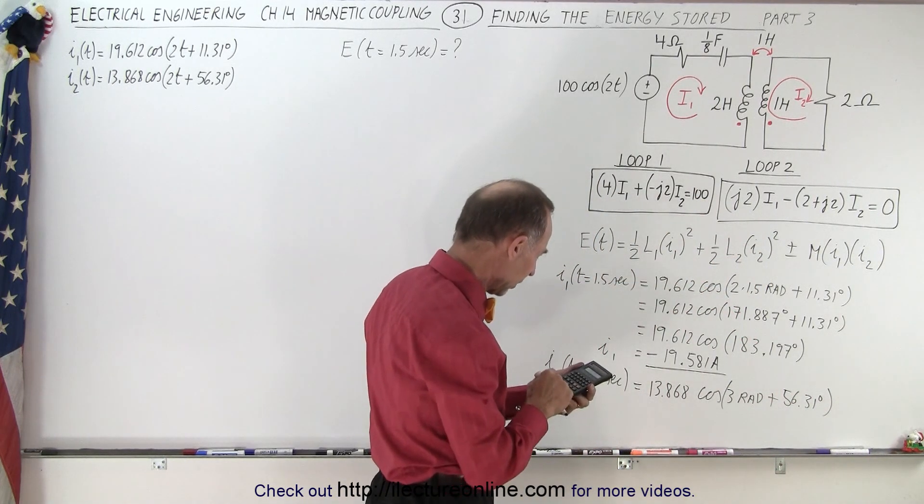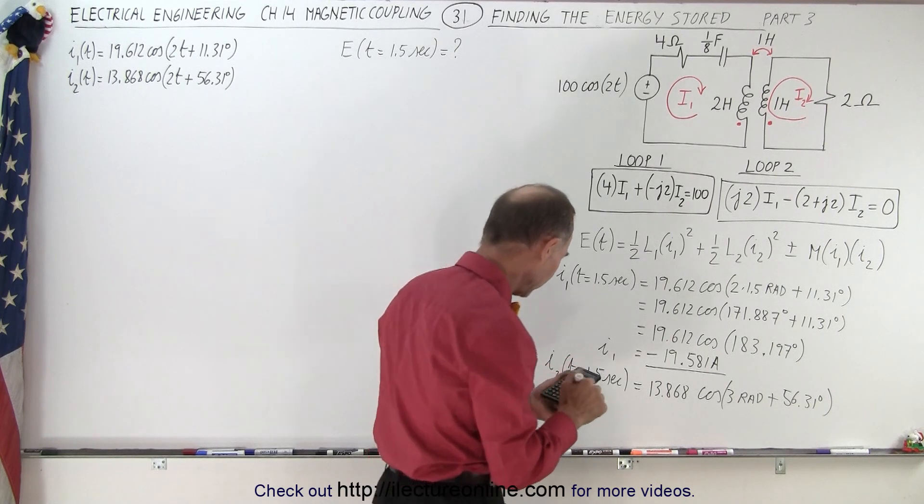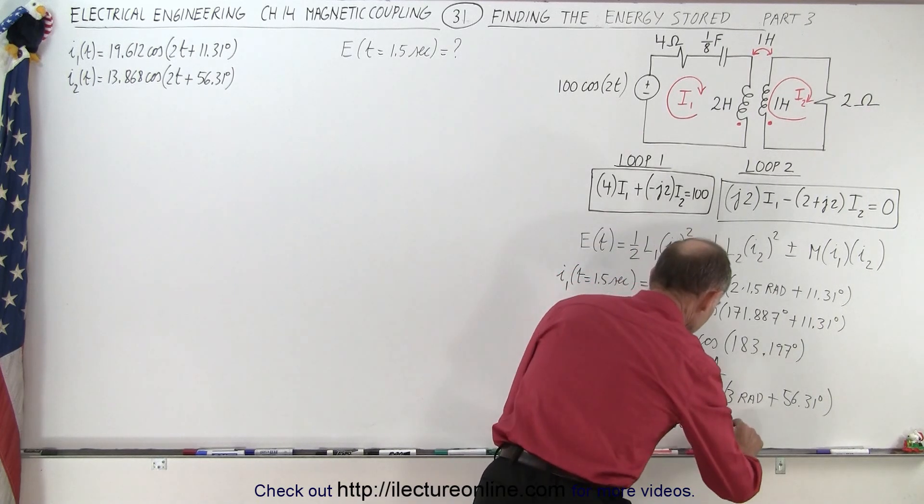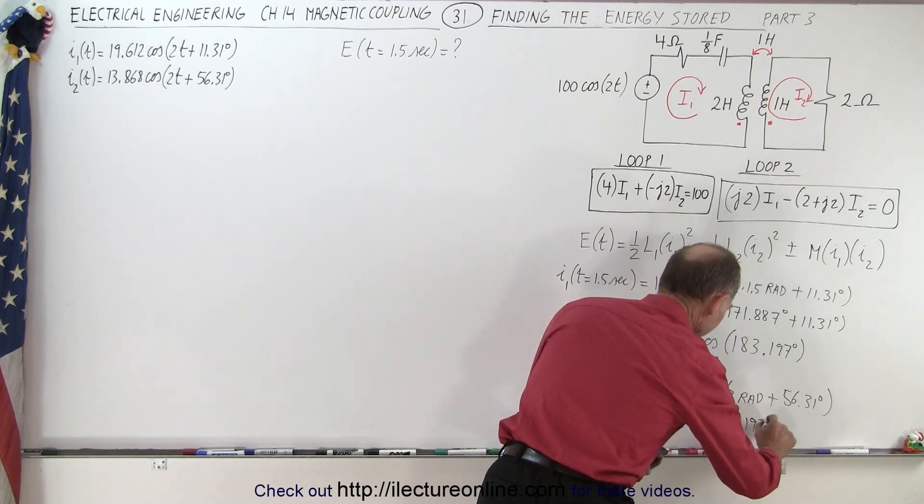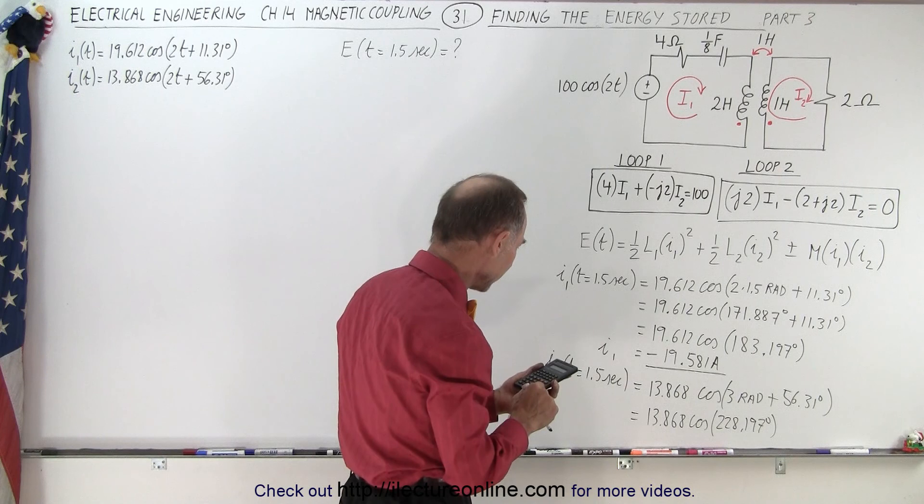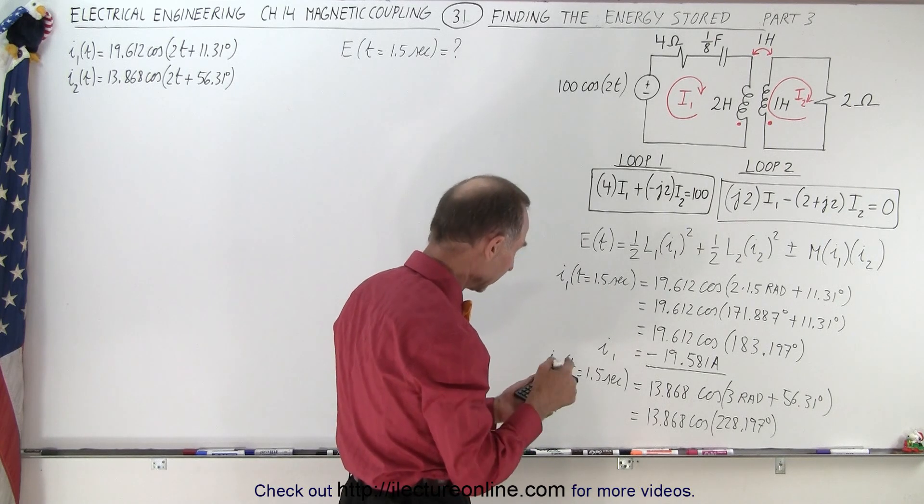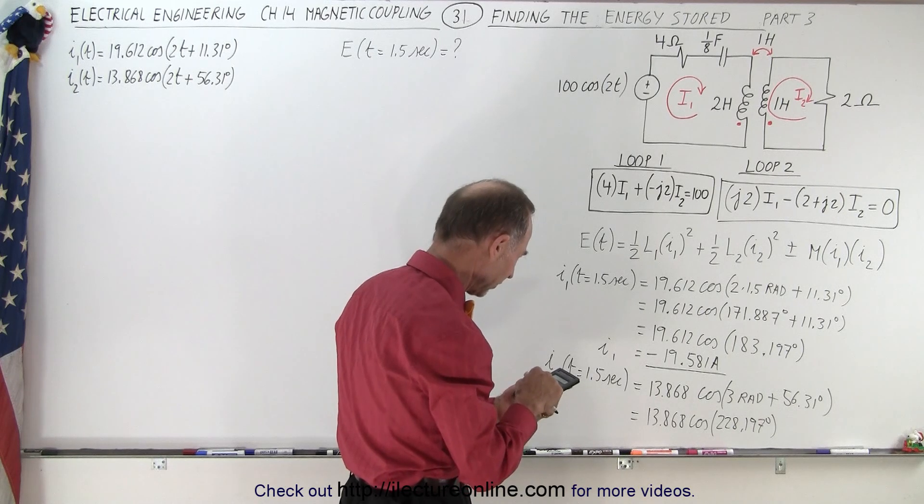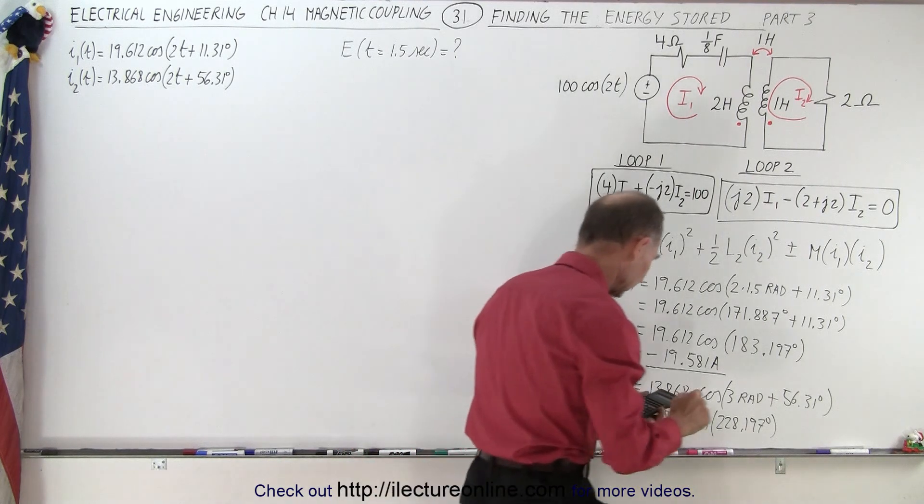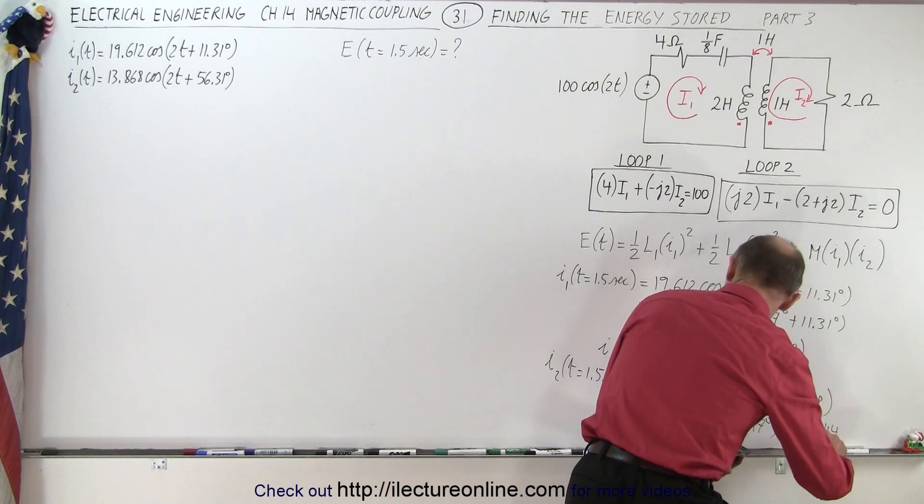That's 171.887 plus 56.31, and so that gives us 13.868 times the cosine of 228.197 degrees. So we take the cosine of that and multiply times 13.868 equals minus 9.244 amps.